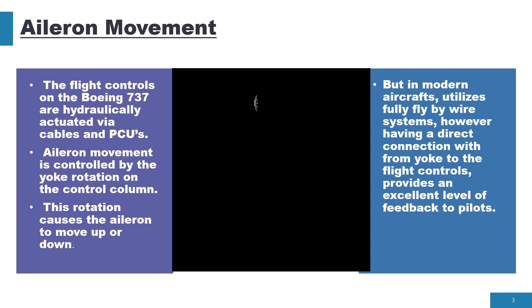Here from this video you can get the idea of how the aileron movement is done. This is a video about the Boeing 737 in which we can see that the flight controls are hydraulically actuated via cables and power control units. The aileron movement is controlled by the yoke rotation on the control column, and this rotation causes the aileron to move up or down.